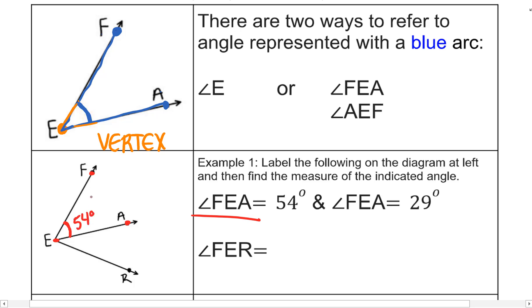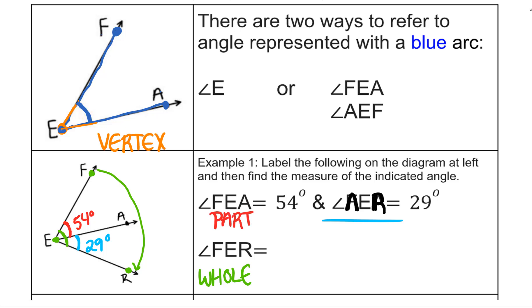Angle AER measures 29 degrees, so that would be this angle, 29 degrees. Now they want us to find the measure of angle FER, this entire measure. Notice that angle FER is the whole. It's the total of the two smaller angles. So the red angle is a part, the blue angle is a part, and the green angle is the whole. Because the smaller parts add up to give me the whole, I just need to add the smaller angles and get the measure of the whole angle, and we get 83 degrees.